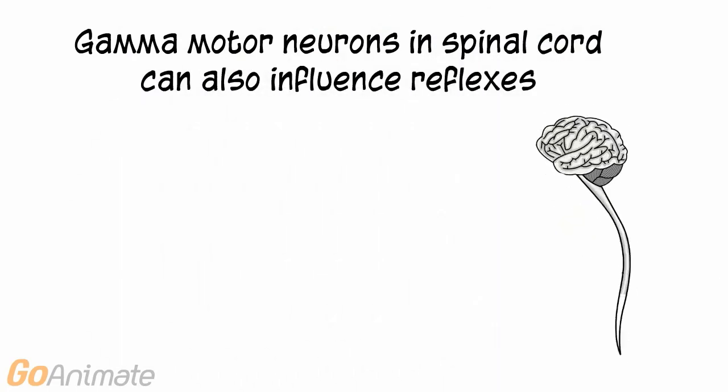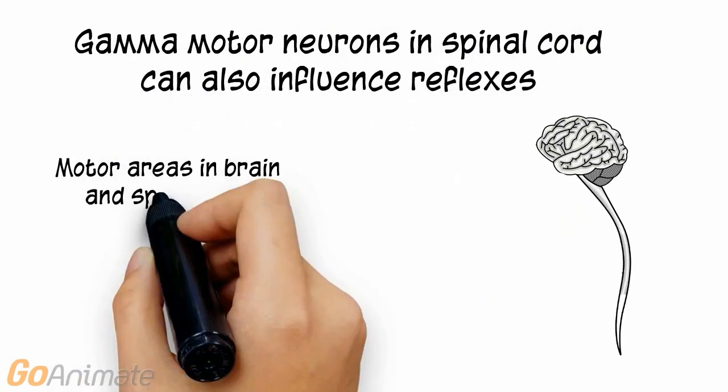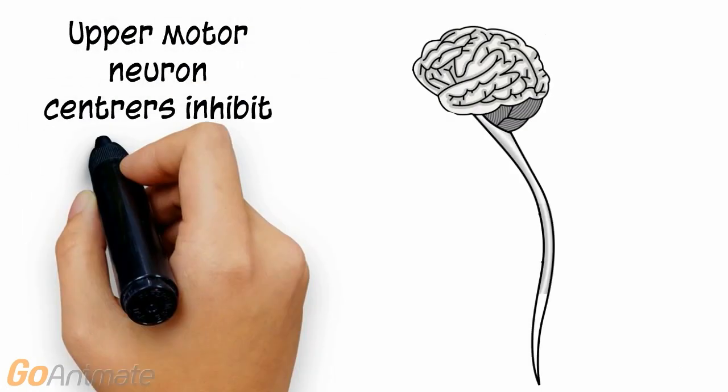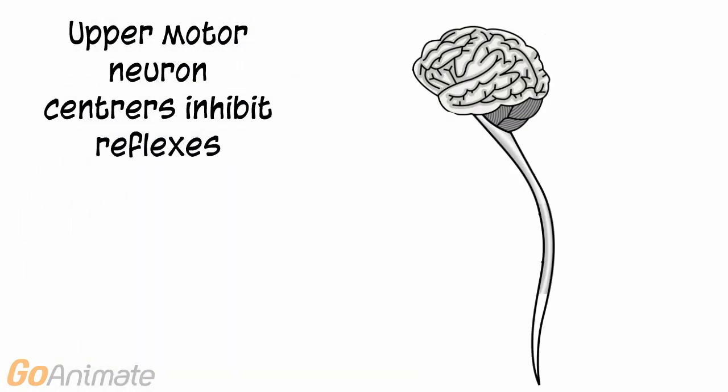There are also gamma motor neurons located in the spinal cord that influence reflexes. These neurons are influenced by motor centers in the brain and spinal cord. The upper motor neuron centers tend to inhibit reflexes.